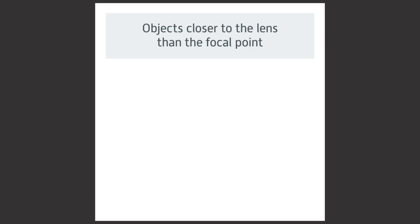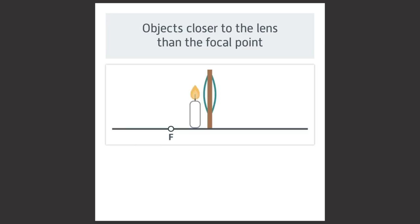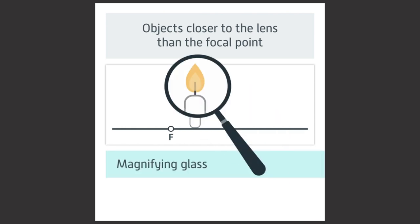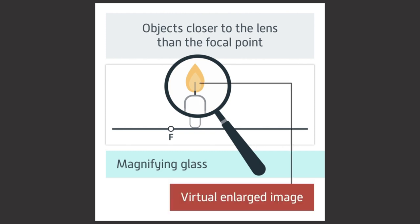For objects closer to the lens than the focal point — inside the focal length — you can investigate this using a magnifying glass and looking at small objects close to the lens. Doing this should produce a virtual, enlarged image.